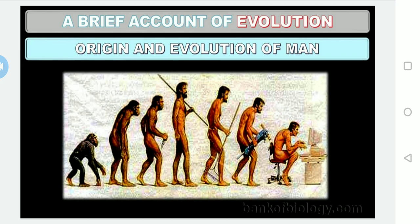Both apes and man have a common primitive ancestor. The word Hominidae is used to describe the total member species of the human family that have lived since the last common ancestor of both man and the apes. The field of science which studies the human fossil record is called paleoanthropology — remember this for competitive exams.